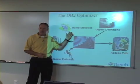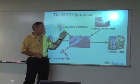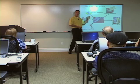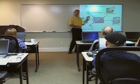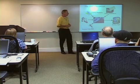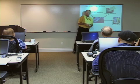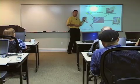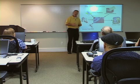Another thing the optimizer looks at during this optimization step is statistics. On tables listed in our FROM clause, what does DB2 know about them? Are there five rows in the table, or five million rows? The number of rows in the table has a huge effect on how DB2 is going to access the data and come up with the access path it thinks is most efficient. There are a lot of different statistics that get logged on data once it's loaded into a table.